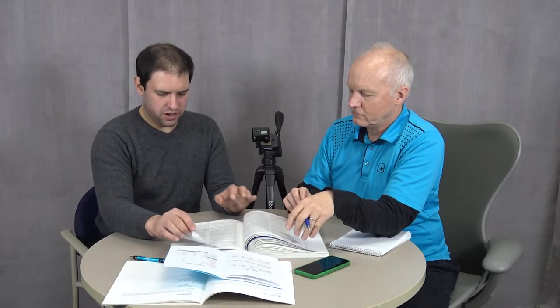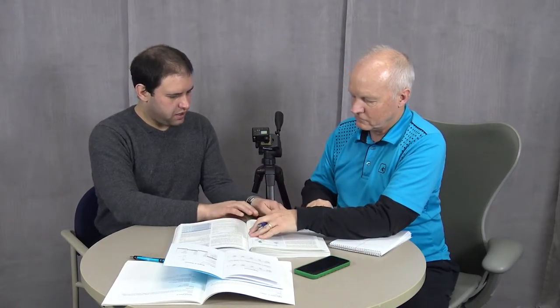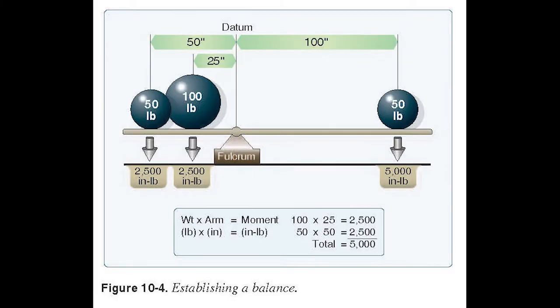We also need to know where those weights are. If you look in the Pilot's Handbook of Aeronautical Knowledge, they have a nice little diagram here on page 10-6. Figure 10-4 is just sort of a teeter-totter. In order to get the airplane to balance around that proper center of gravity point, just like a teeter-totter, we have to make sure that the weights balance out.